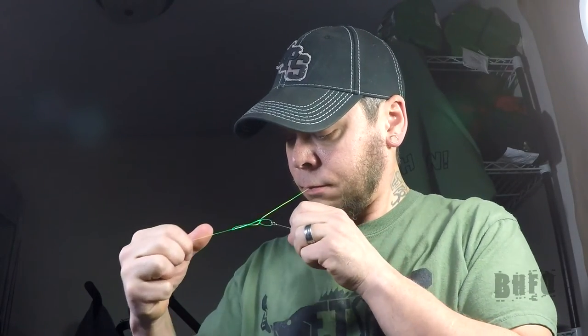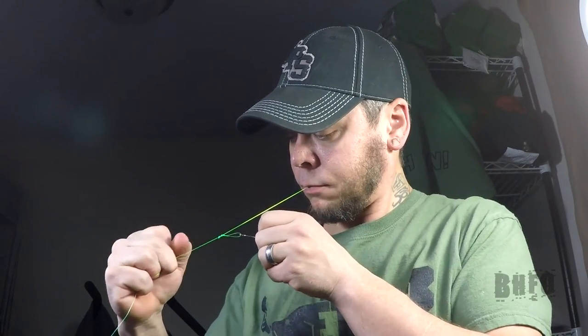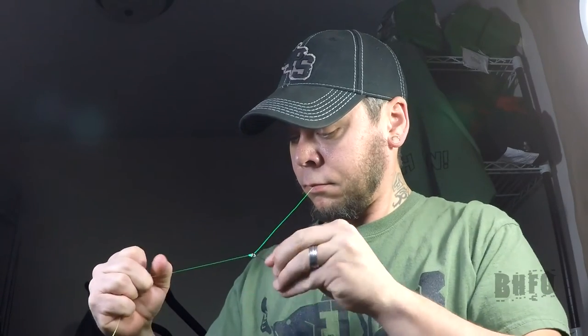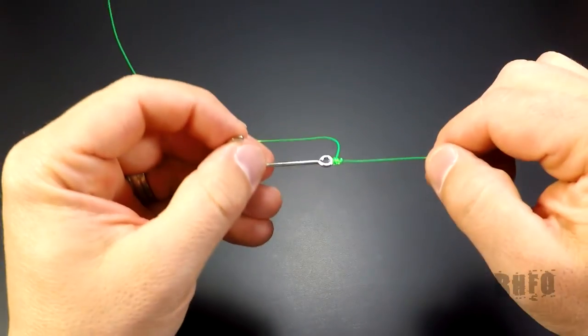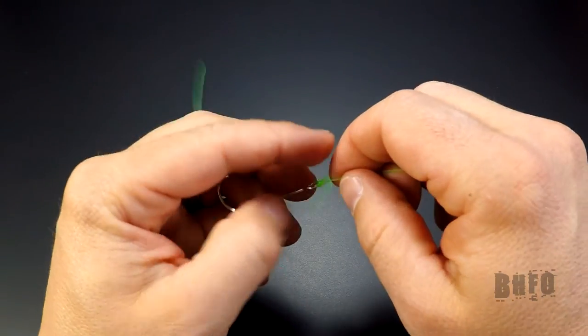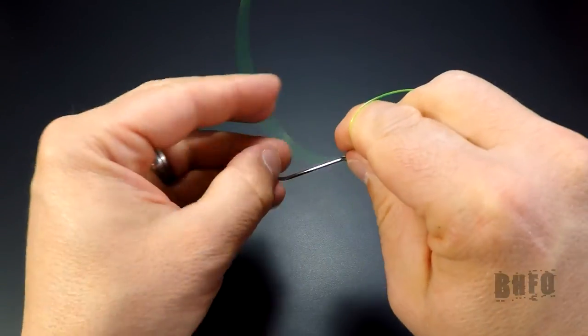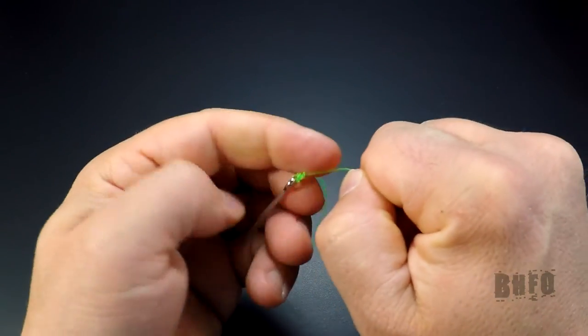After the line has been lubricated, it's time to cinch up the knot. I found with this knot, holding the tag in my teeth while holding the lure or hook and pulling on the main line works best. After cinching up using your teeth, you may need to cinch up a bit more using your thumb and index finger, pinching just above the knot while pulling on the main line until the knot is nice and tight.